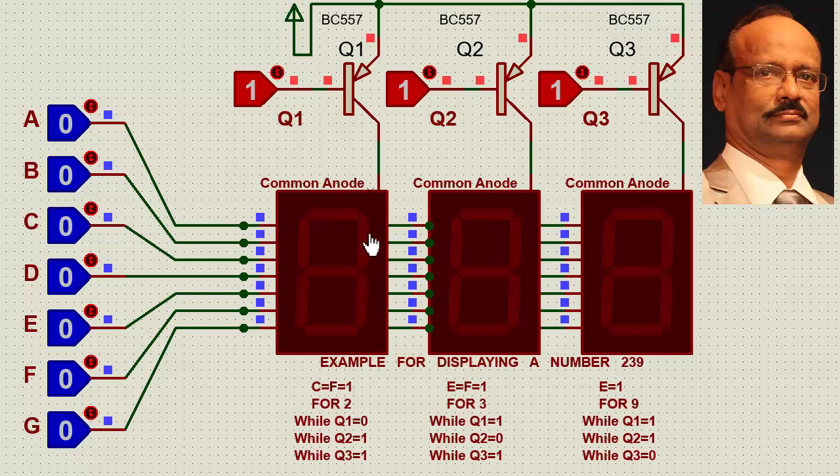Now for first one, that means 2 to be displayed here, what we have said is that C equals F equals 1. So let me C equals 1 and F equals 1 for displaying 2 here. While Q1 is 0 and Q2, Q3 as 1. So I will make this 0. You see that now number 2 is displayed.